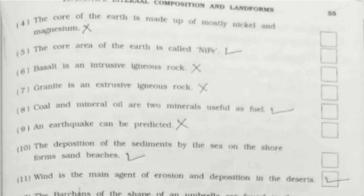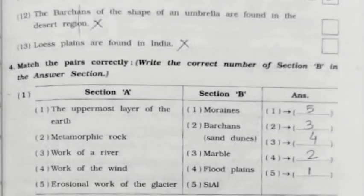Sixth: Basalt is an intrusive igneous rock — False. Seventh: Granite is an intrusive igneous rock — False. Eighth: Coal and mineral oil are two minerals useful as fuel — True. Ninth: An earthquake can be predicted — False. Tenth: The deposition of sediments by the sea on the shore forms sand beaches — True. Eleventh: Wind is the main agent of erosion and deposition in the deserts — True. Twelfth: Barchans of the shape of an umbrella are found in the desert region — False.